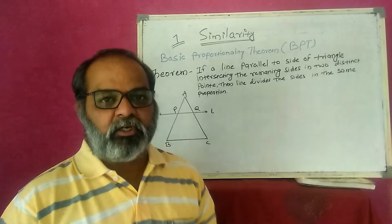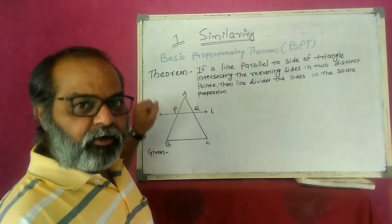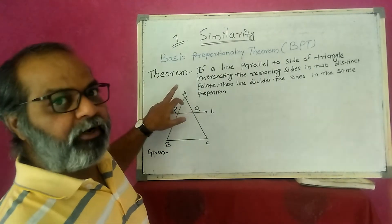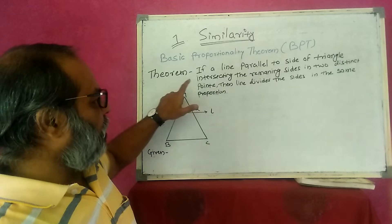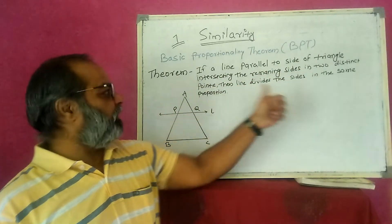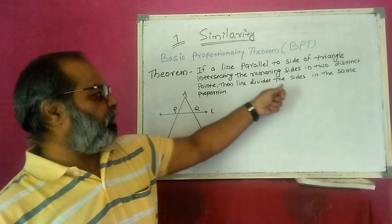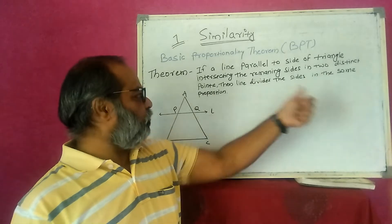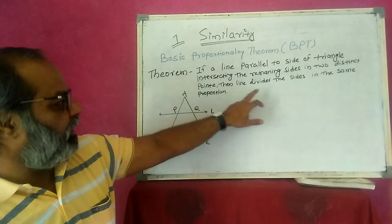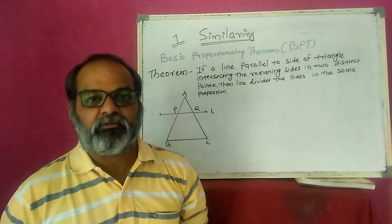Let's learn what BPT is. I'll write the statement of the theorem. The statement is: if a line is parallel to a side of a triangle and intersects the remaining two sides in two distinct points, then the line divides those sides in the same proportion.